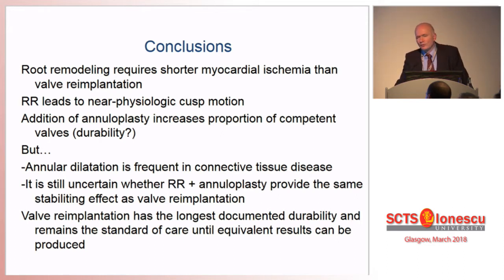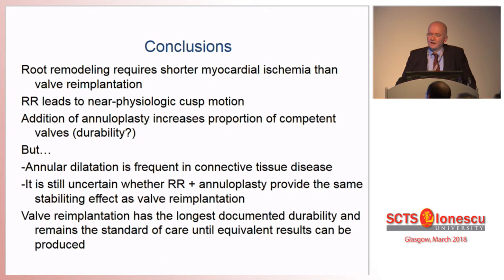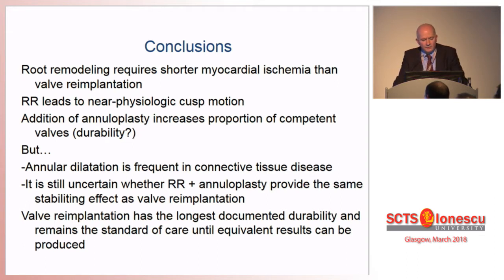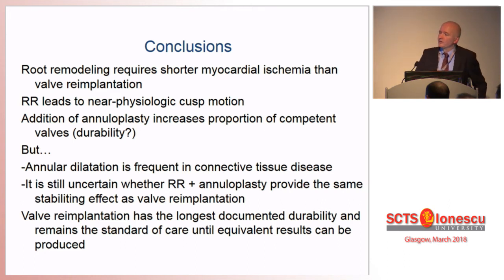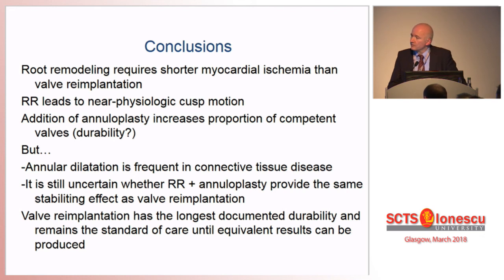To summarize: root remodeling is the shorter operation and probably results in better and more physiologic cusp motion. The addition of an annuloplasty increases the proportion of competent valves and treats the specific problem of annular dilatation seen in connective tissue disease. However, whether annuloplasty can stabilize the annulus long-term the same way re-implantation does remains uncertain. Valve re-implantation has the longest documented durability and remains the standard of care in valve-preserving surgery until equivalent results can be produced.